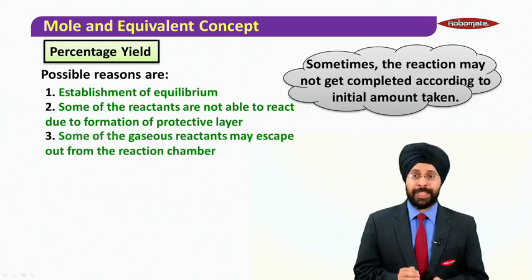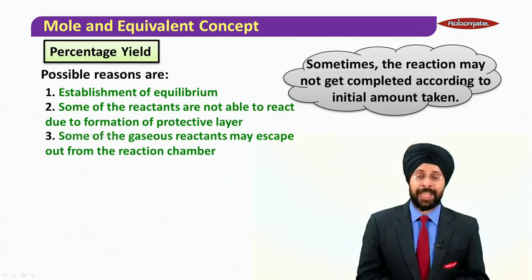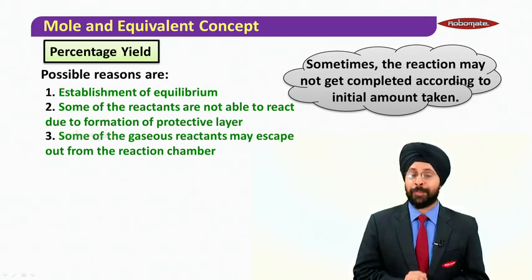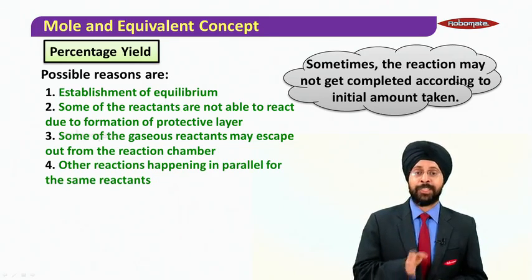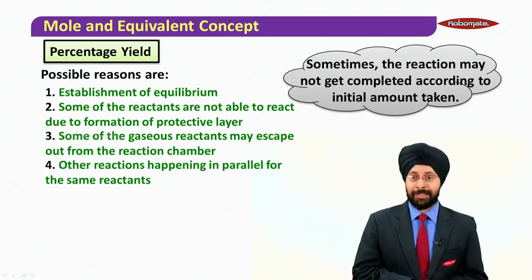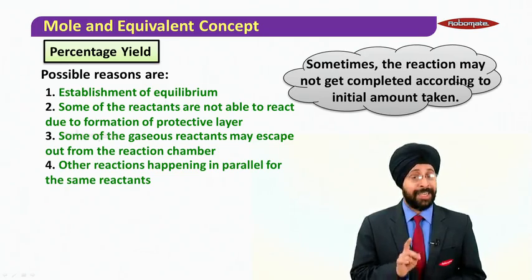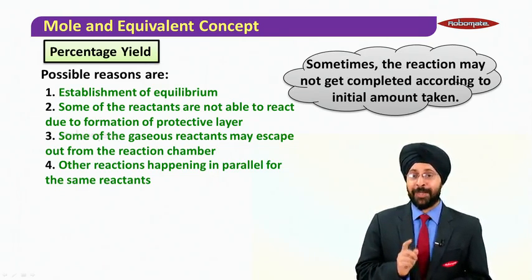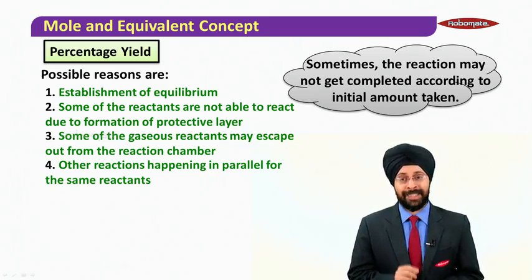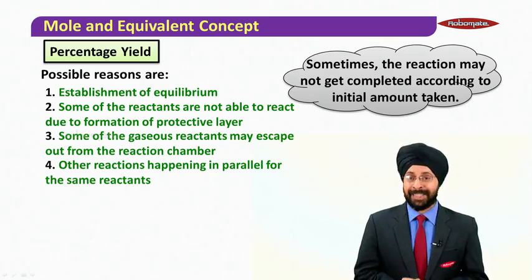Now the third possible case would be when we take gaseous reactants, they may simply escape out of the reaction chamber and will not give you the products. And the fourth possible reason can be other reactions happening in parallel for the same reactants. So you have studied N2 and H2 can give you ammonia NH3, but they can also combine to give you N2H4 which is called hydrazine. So you may not get ammonia in total that you are thinking.